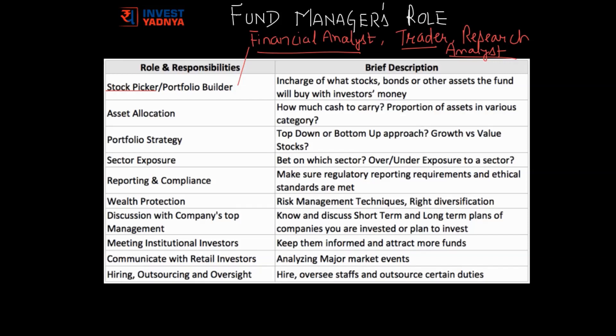Every fund has defined investment objectives which decide not only the asset type but also the general theme within which a fund manager can select securities. Within that framework, the fund manager decides on the asset allocation — how much cash to carry for redemptions, what proportion of assets needs to be in large-cap, mid-caps, and small-caps. If it is a hybrid fund, it needs to be decided how much is in equity and how much in debt. If it is a complete debt fund, how much money needs to be allocated to government securities or corporate bonds.